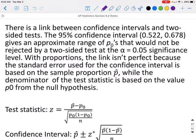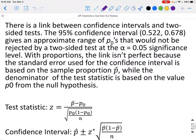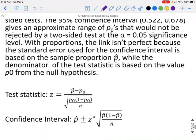There is a link between the confidence interval and two-sided test. The 95% confidence interval from 0.522 to 0.678 gives an approximate range of the P sub zeros that would not be rejected by a two-sided test at an alpha level of 0.05 significance level. With proportions, the link isn't perfect because the standard error used for the confidence interval is based on the sample proportion P hat, while the test statistic is based on P sub 0.